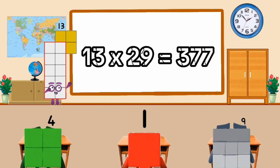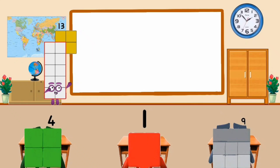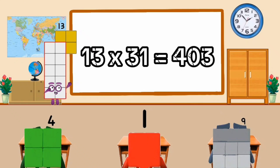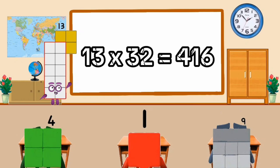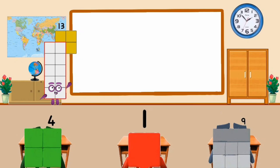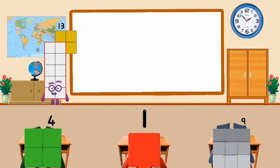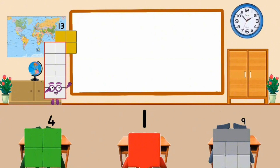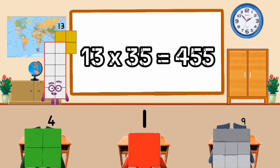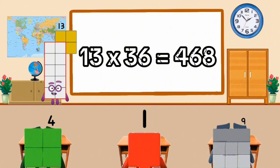13 times 29 equal 337. 13 times 30 equal 390. 13 times 31 equal 403. 13 times 32 equal 416. 13 times 33 equal 429. 13 times 34 equal 442. 13 times 35 equal 455. 13 times 36 equal 468.